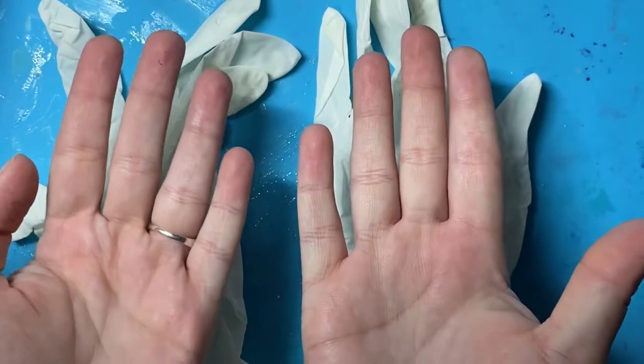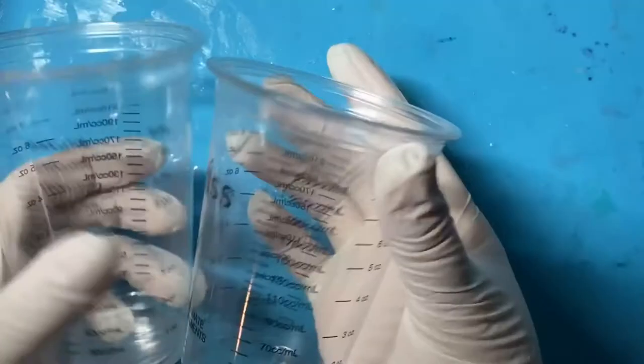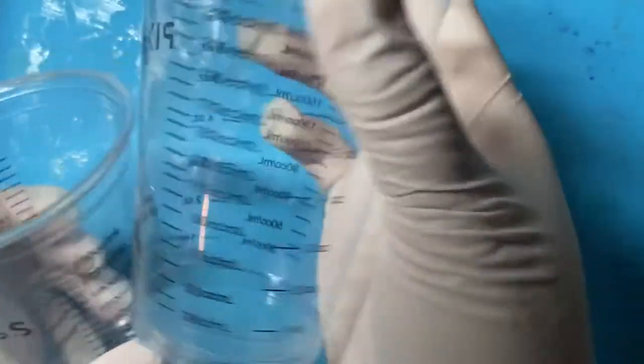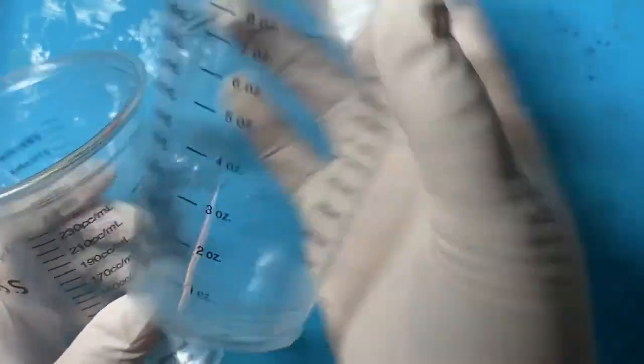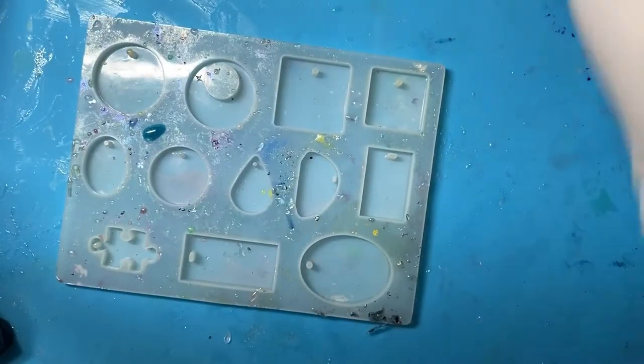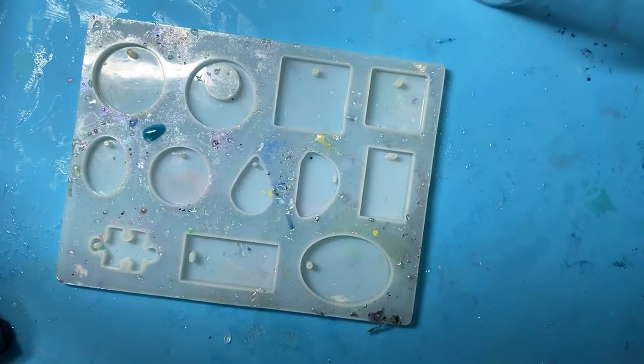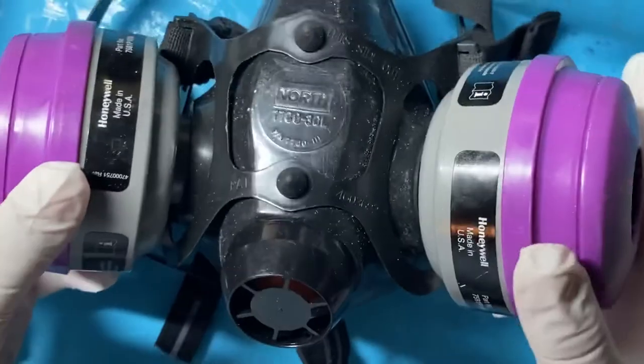First things first, make sure you guys have your gloves. Then I'm going to use these cups to measure out my epoxy resin. This is the silicone rubber that I'm going to be using to make necklaces. Sorry about the mess, I know it's pretty messy.